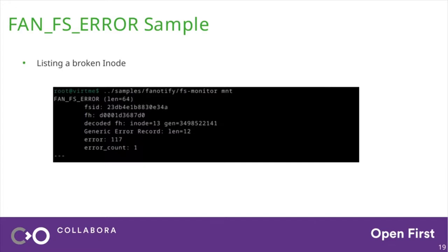In this demo I went into another shell and tried to ls a file I knew was broken in my file system. The output shows: fsid — a unique identification of the file system; a file handle carrying the inode number and generation number so you can uniquely identify what failed; a generic error record which is a file-system-specific structure identifying which error failed; and finally an error count showing how many errors have happened since the last observation. This report differs for different kinds of errors — in this case it was an error in a file with inode number 13.